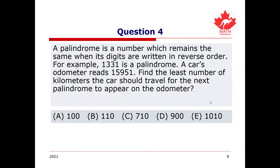Question 4: A palindrome is a number which remains the same when its digits are written in reverse order. For example, 1331 written backwards is still 1331, so it's a palindrome. A car's odometer reads 15951. Find the least number of kilometers the car should travel for the next palindrome to appear on the odometer. Will it be A: 100, B: 110, C: 710, D: 900, or E: 1010? Pause and attempt the question first.